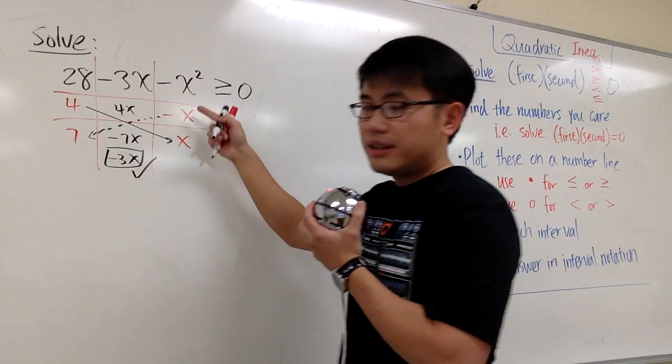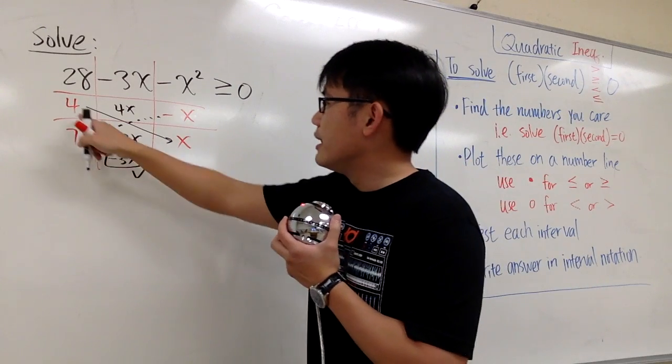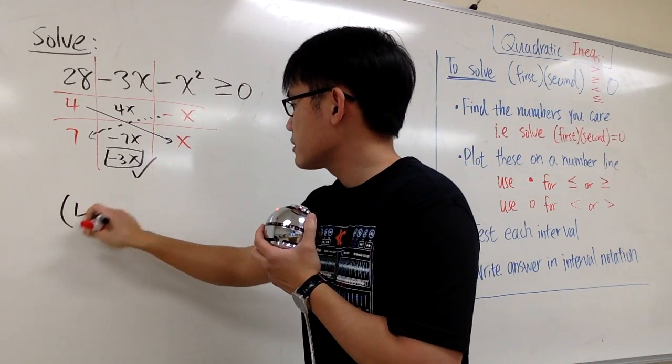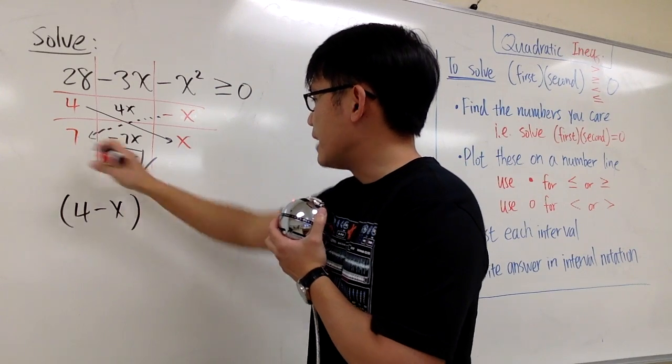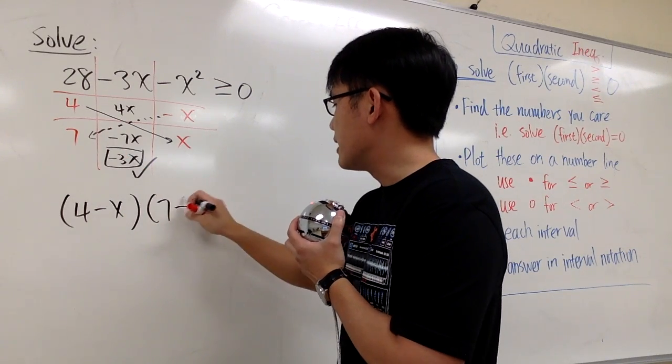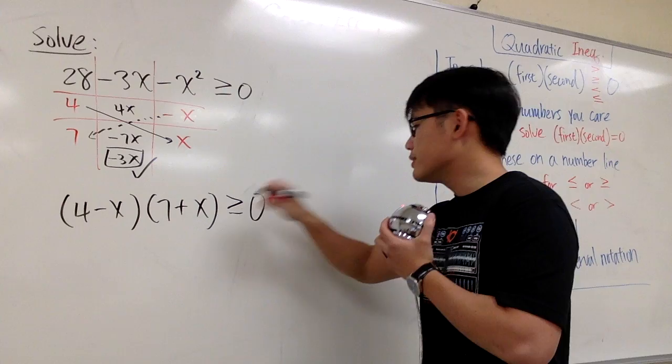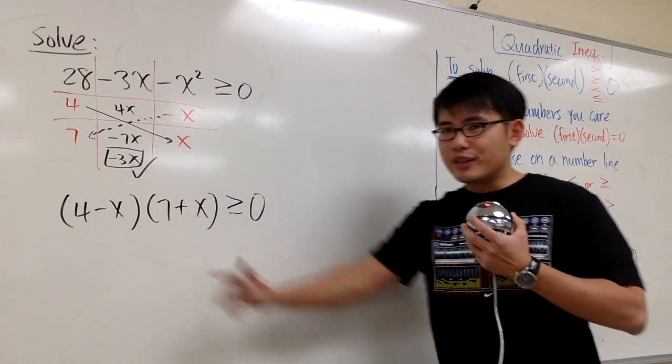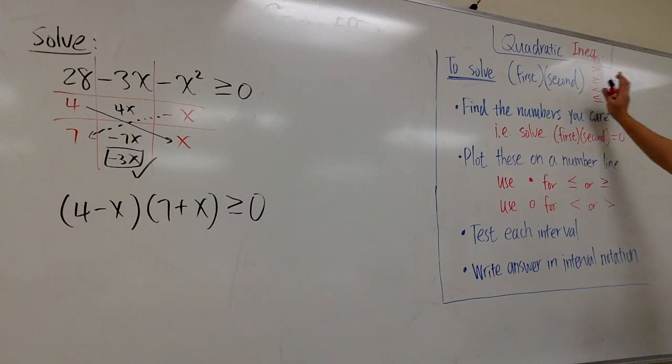In other words, to solve this, it's the same as saying, let's just write this down as 4 minus x times 7 plus x, and then I'll maintain greater than or equal to 0. And now, this quadratic inequality is in the form that we like to look at.